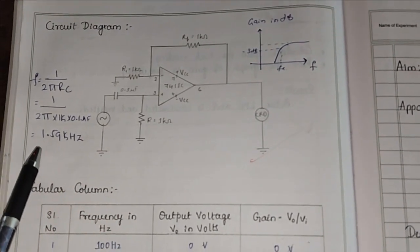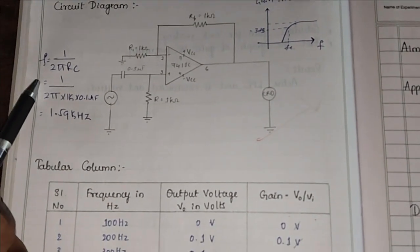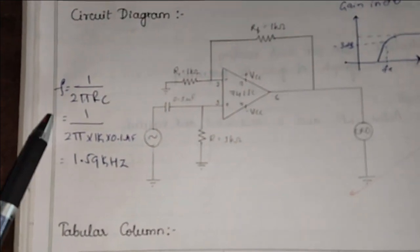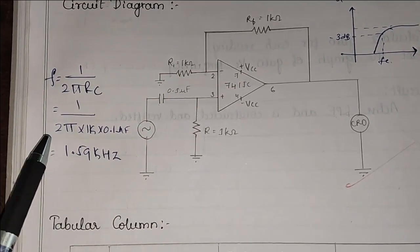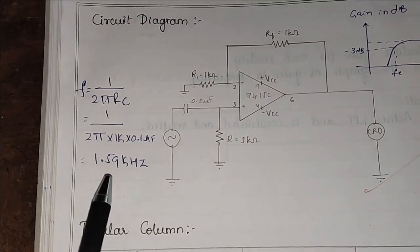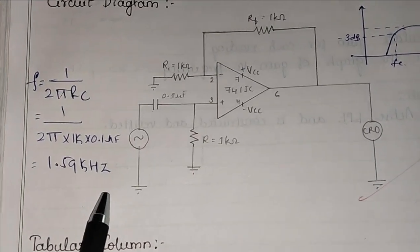Now we will calculate its cutoff frequency using this formula. The cutoff frequency formula is given as 1 divided by 2 pi RC. Once we substitute this value that turns out to be F is equal to 1.59 kilohertz.